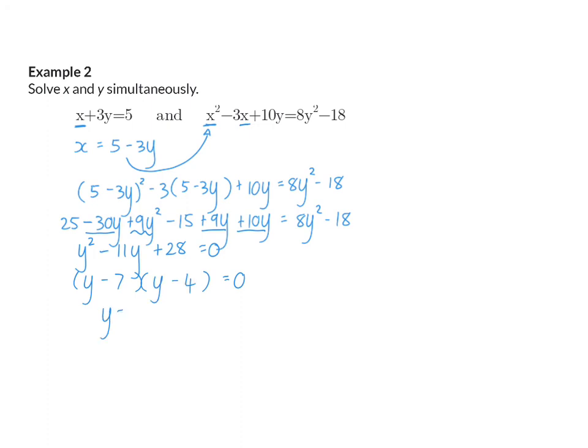Now, to get my answers for x, I'm going to substitute back into my original equation where x is alone. And the first option is to substitute y with 7. And that means x can be -16. Or I can substitute y with 4. And that will give me that x is -7.